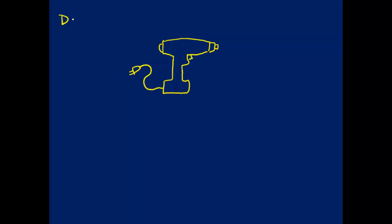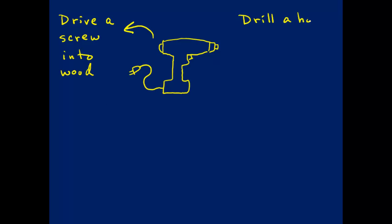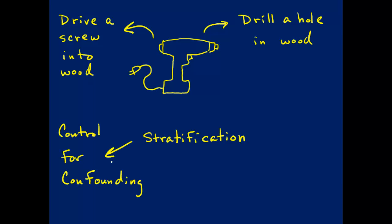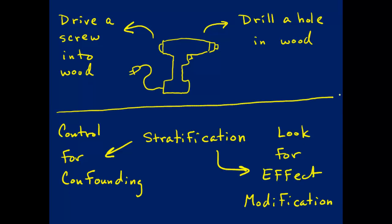Some of you might have used a power drill before, and this is my best rendition of a power drill. We can use a power drill either to drive a screw into wood or to drill a hole in wood. The idea here is that one tool can do more than one thing. The same is true with stratification. We've already learned one thing we can do with stratification, which is to control for confounding. Now we're going to learn another thing we can do with stratification, which is to look for effect modification. The reason students mix up controlling for confounding and looking for effect modification is because they both use stratification — but they're different things that just use the same tool.